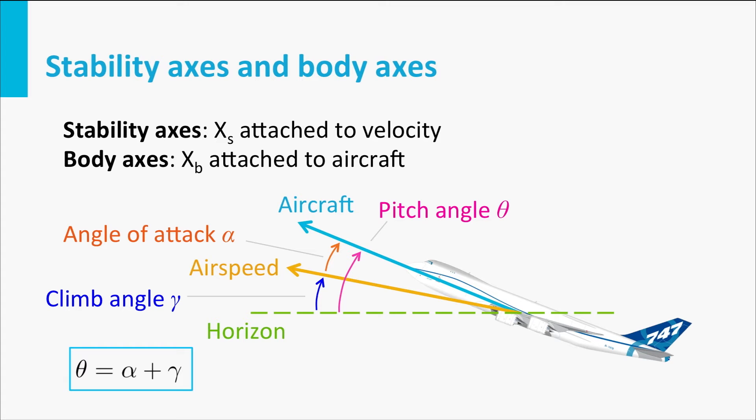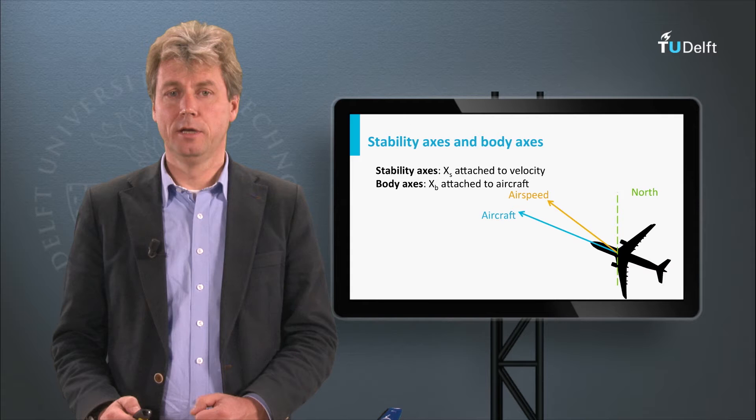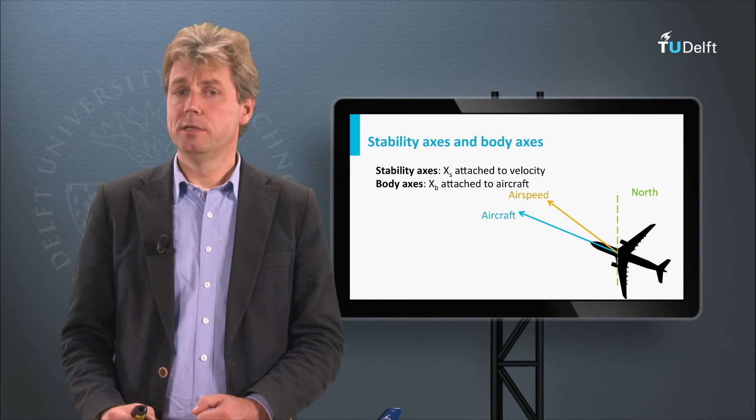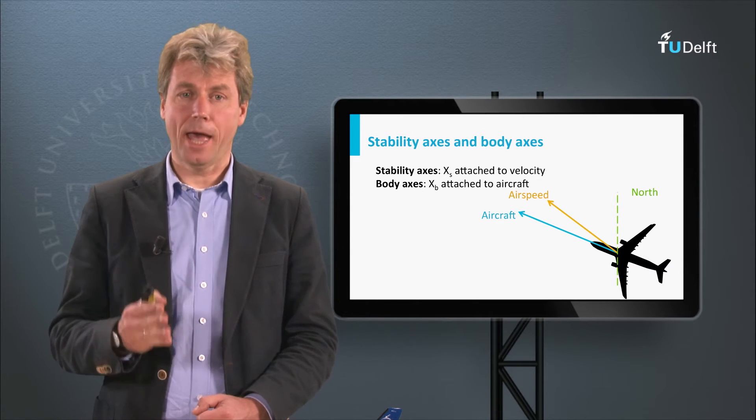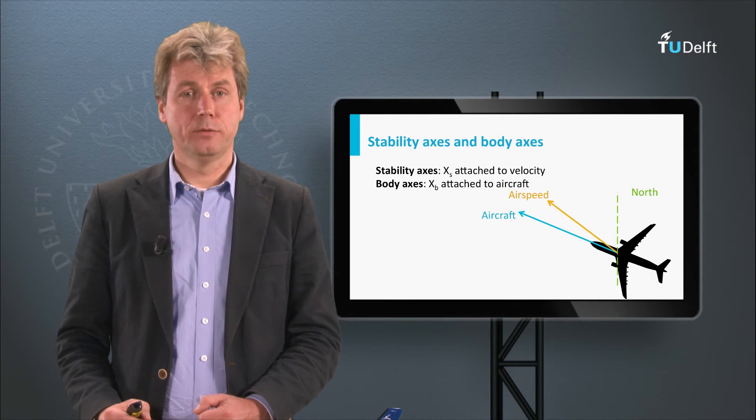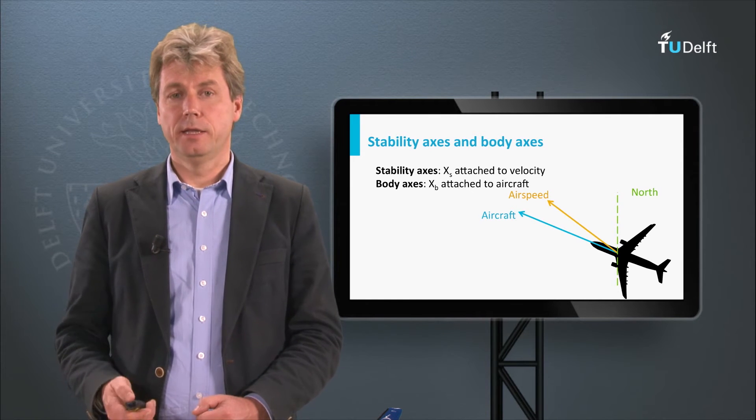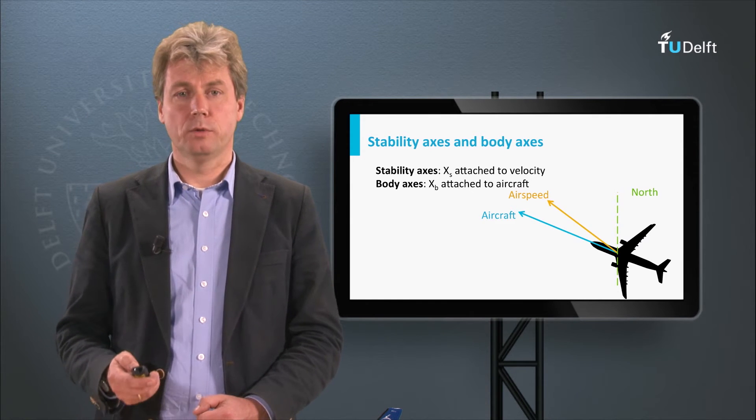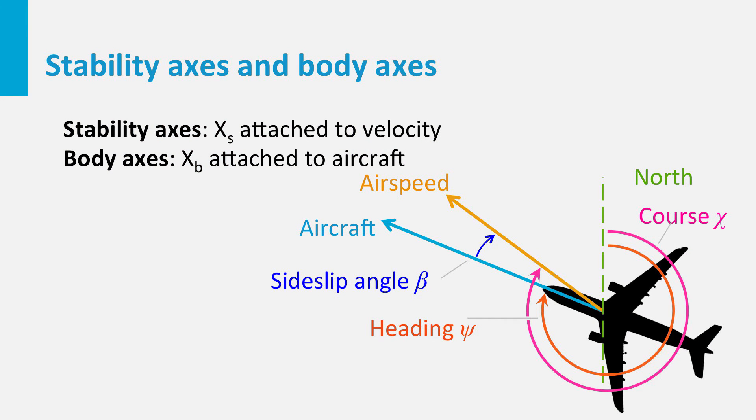We have a similar situation if we look at the lateral, the top view of the aircraft. Here, again, there can be a difference between the direction in which the x-axis is pointing and the direction that we are flying. And this angle between those two is what is called the side-slip angle. Side-slip angle beta is the angle with which the aircraft slips, and as you can imagine this results in a lot of drag, so normally you would like to avoid this.